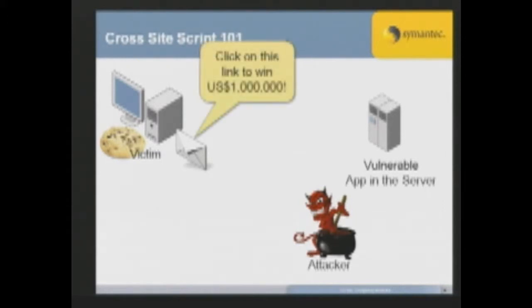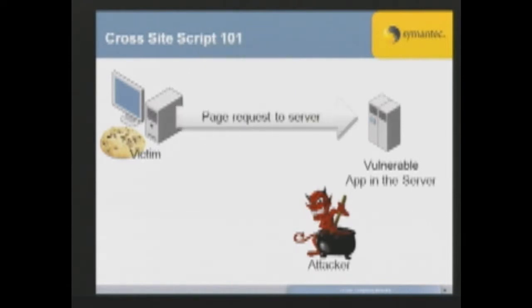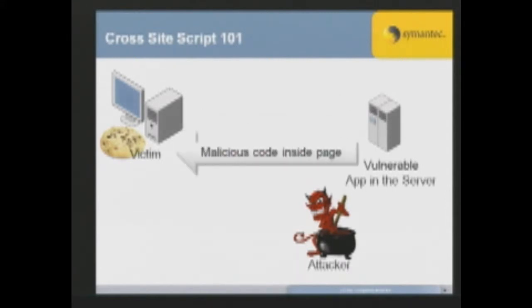The attacker sends a message with some really interesting topic - something that would coerce the victim to open it, such as 'click here to win a million dollars.' This email comes with a special URL that has the address of the server plus some data that actually falls out of bounds from being data and becomes a script once processed by the vulnerable server. The server embeds the script in the page and serves it back to the client, and suddenly this data sent by the attacker becomes legitimate content in the web page.